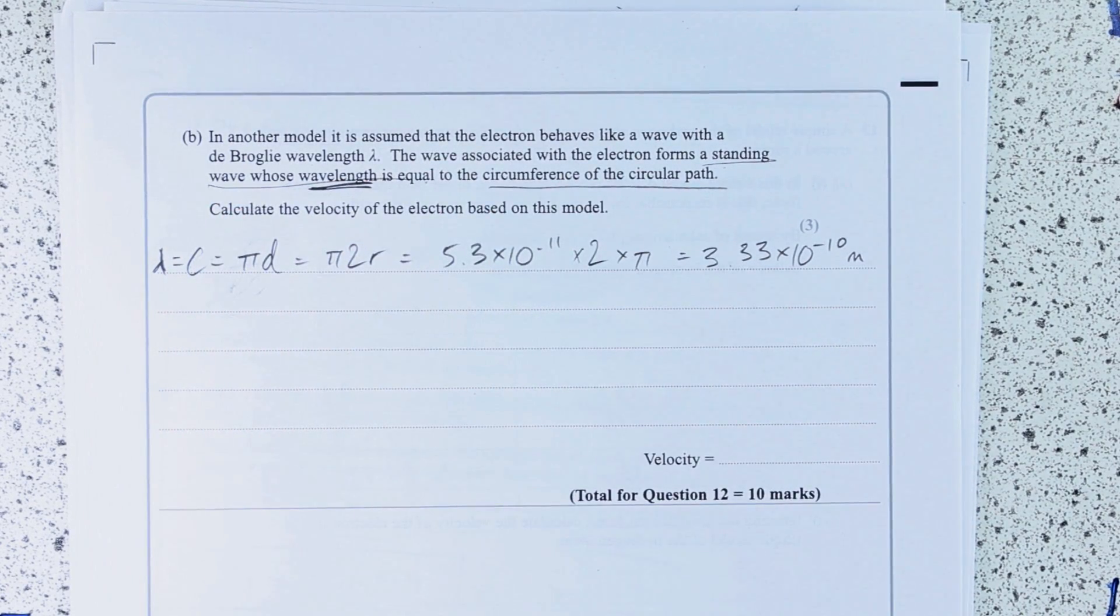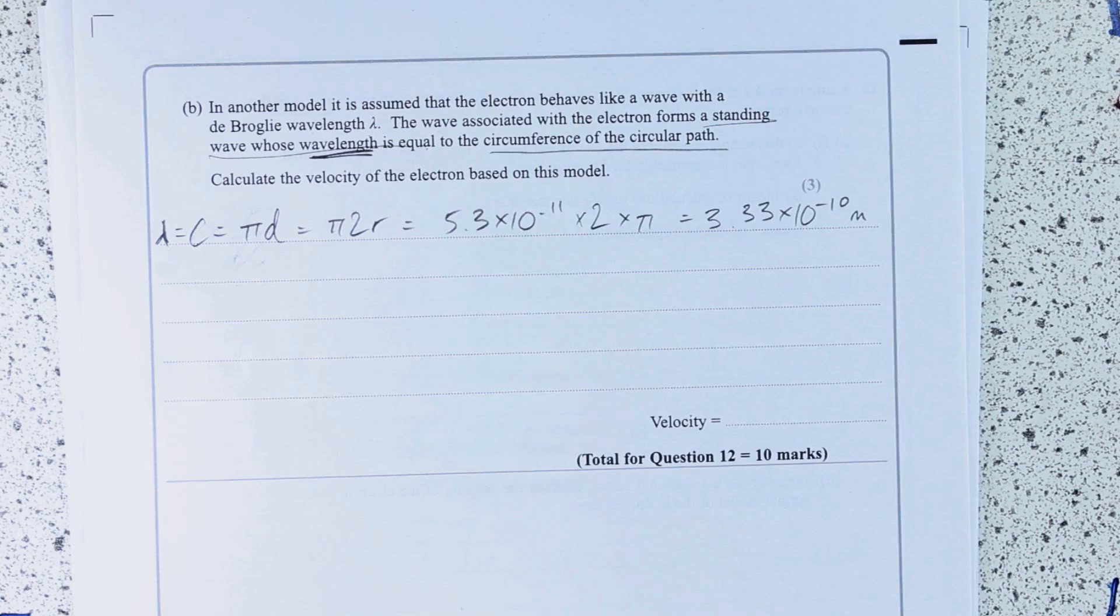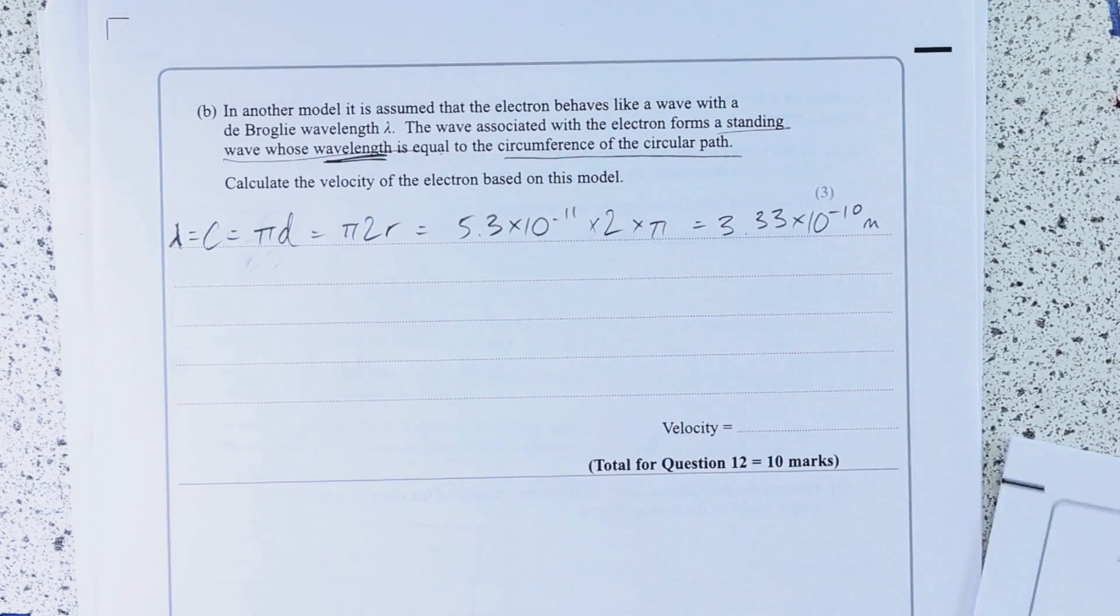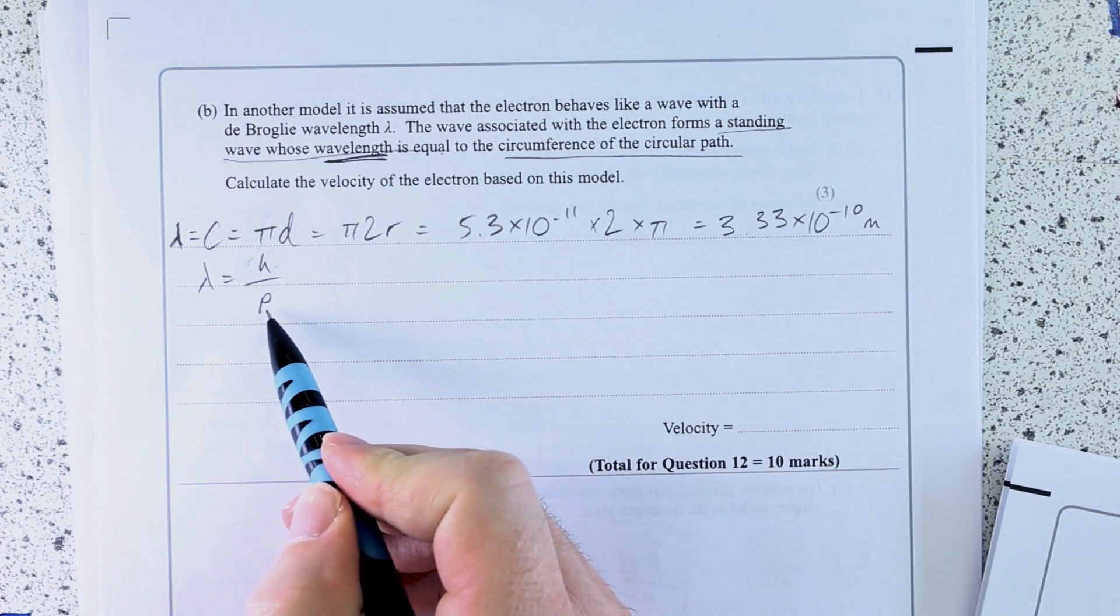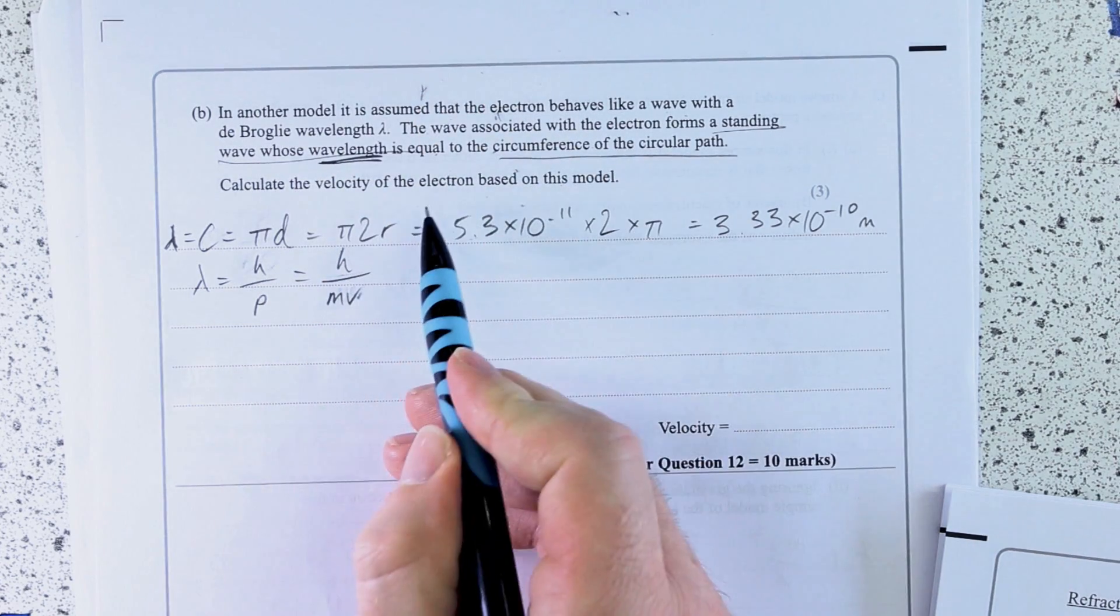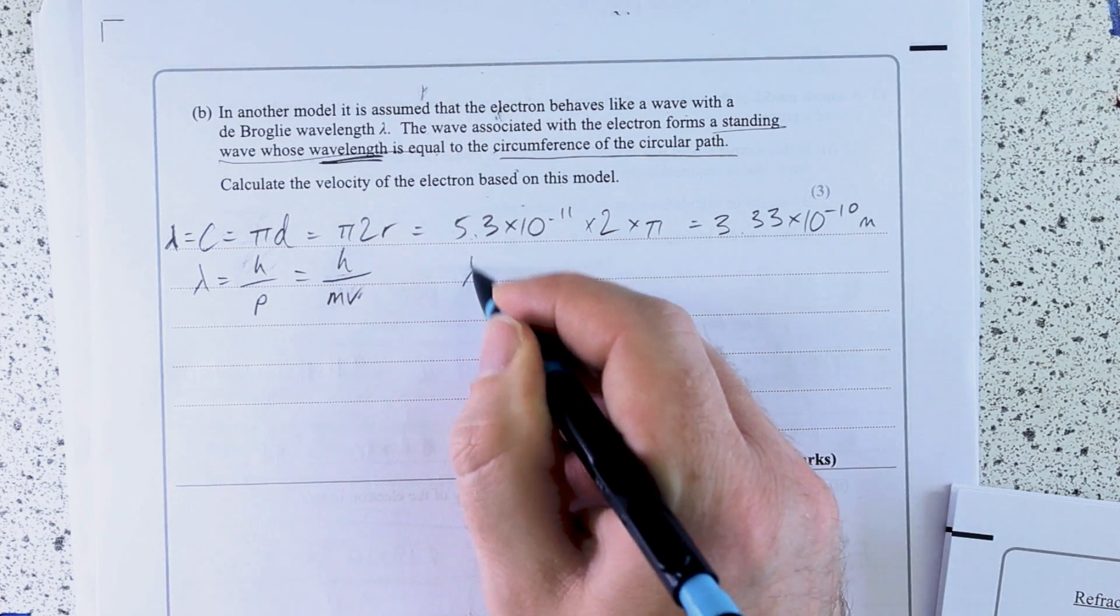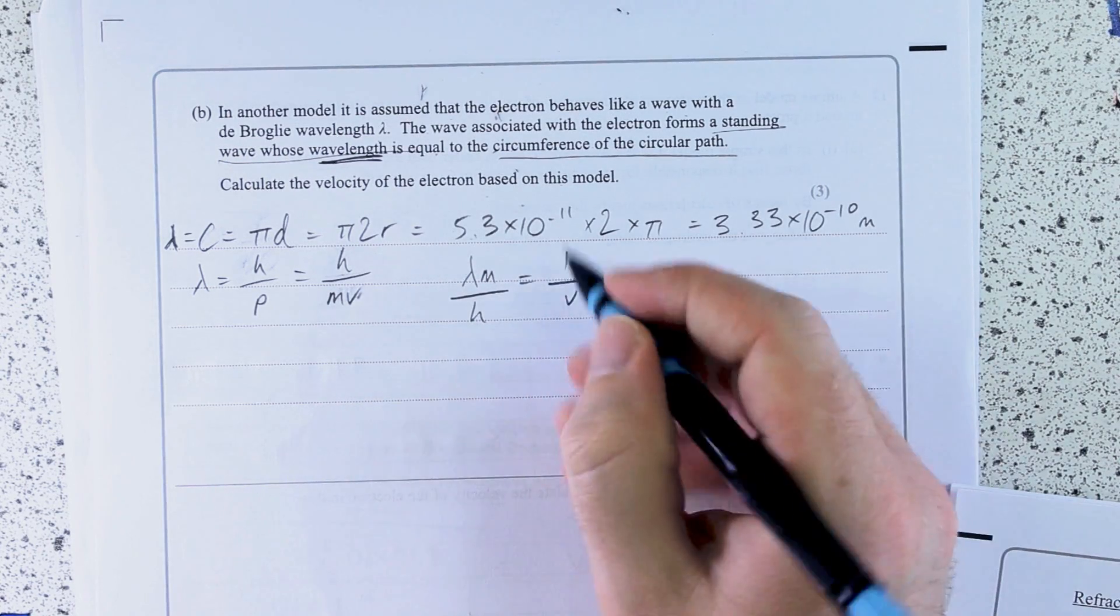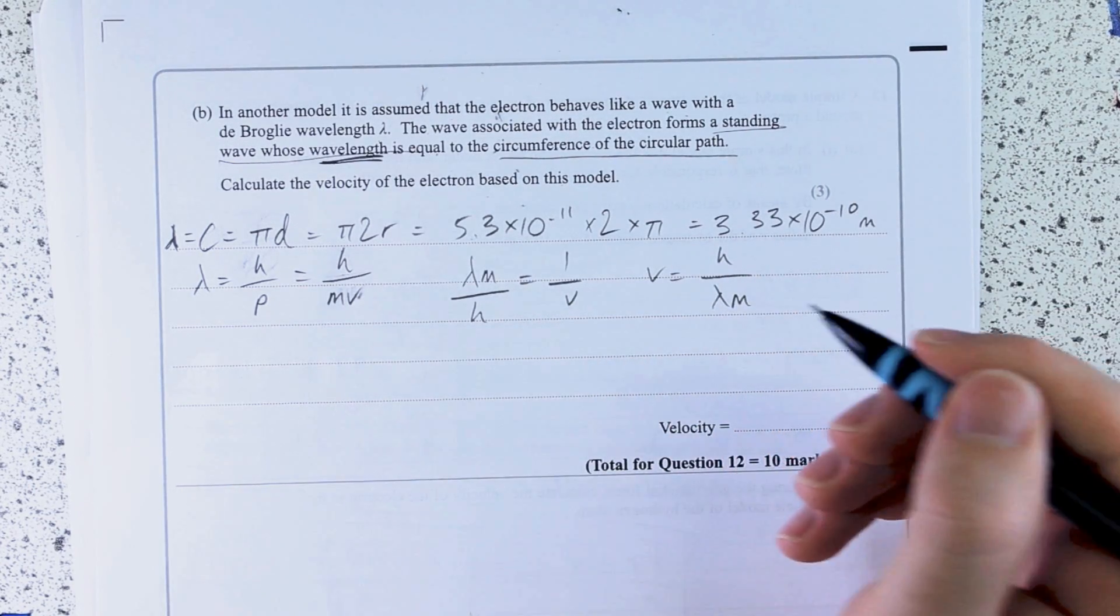Now we just need to know we've got a wavelength, and we've been told that is a de Broglie wavelength, so we just need to find that equation there. Lambda is h over p, where h is a constant, p is mv, so we can sub that in now. P is mv, where we know we're talking about the mass of an electron, and we want to work out v, so rearrange for that. Lambda m over h equals 1 over v, so h over lambda m gives us v.